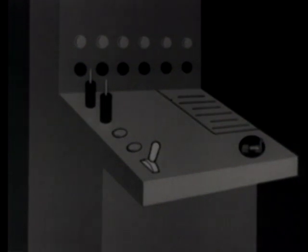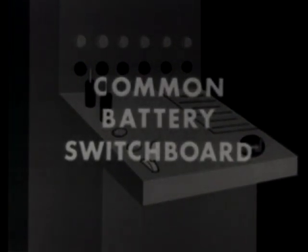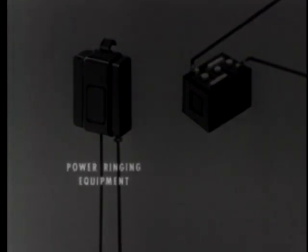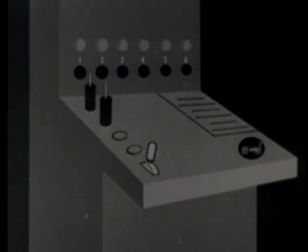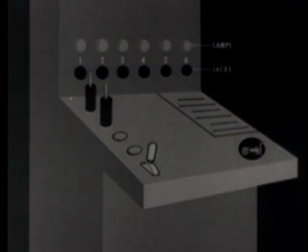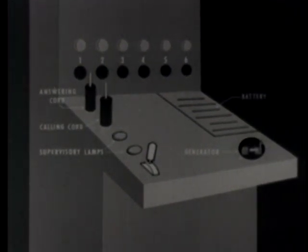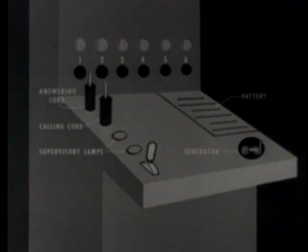We can facilitate the handling of calls even further by using a common battery switchboard. This system provides for automatic rather than manual signaling, eliminates local batteries, and provides faster service through more efficient operation. Generators and batteries are eliminated at the local stations, and the switchboard provides all power for both signaling and talking. Each station terminating on the common battery switchboard has its own jack and line lamp. The operator's key shelf is provided with a battery source and contains a generator, an answering cord, a supervisory lamp, a calling cord, and a supervisory lamp which signals when the receiver is replaced on the hook.